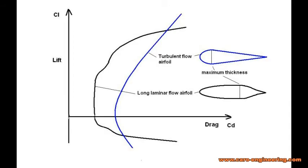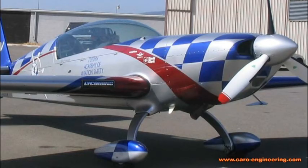The next variable is the station of the greatest thickness, given as a distance from the leading edge as a percent of the chord. Depending on the mission, the greatest thickness may be as far forward as 25% of the chord. This is typical for an airfoil used on an aerobatic airplane, where it allows — in combination with a large leading edge radius — flying at high angles of attack without stalling. The drawback is high drag and little laminar flow.